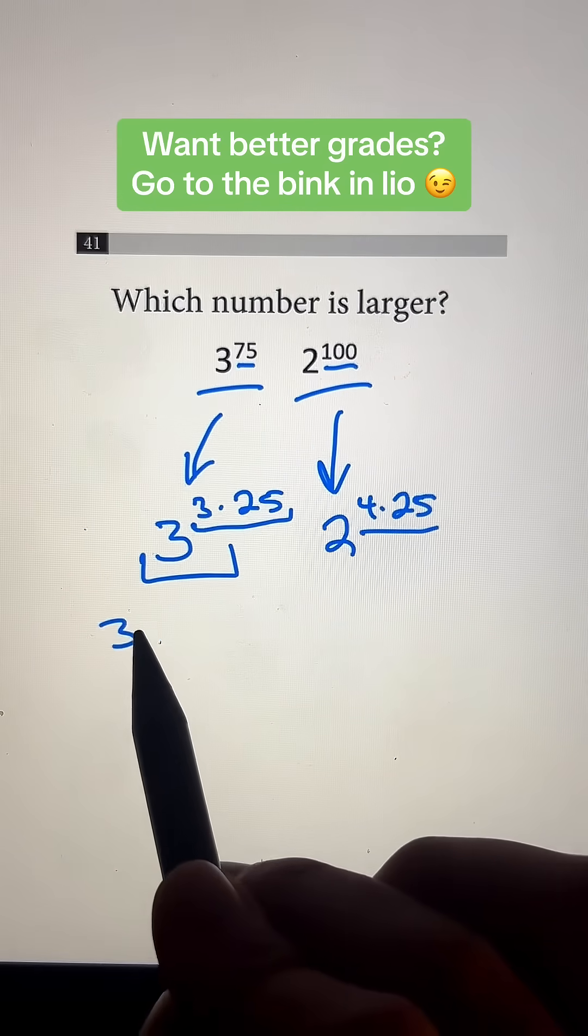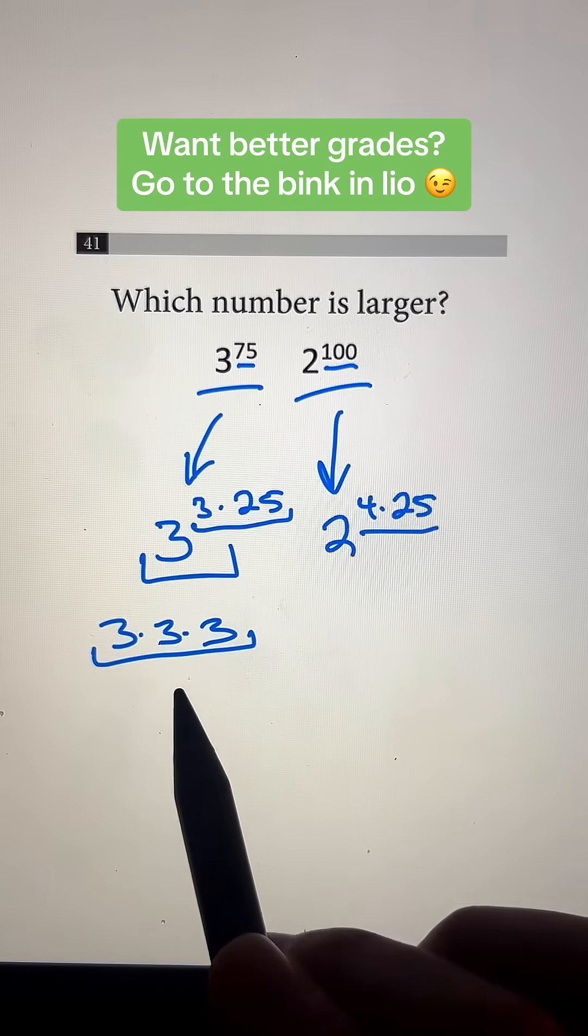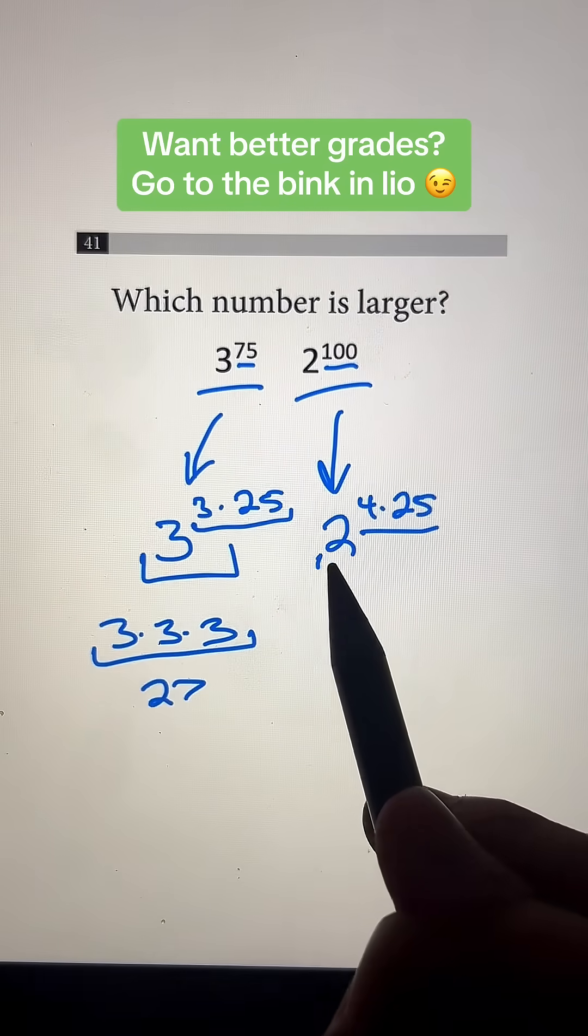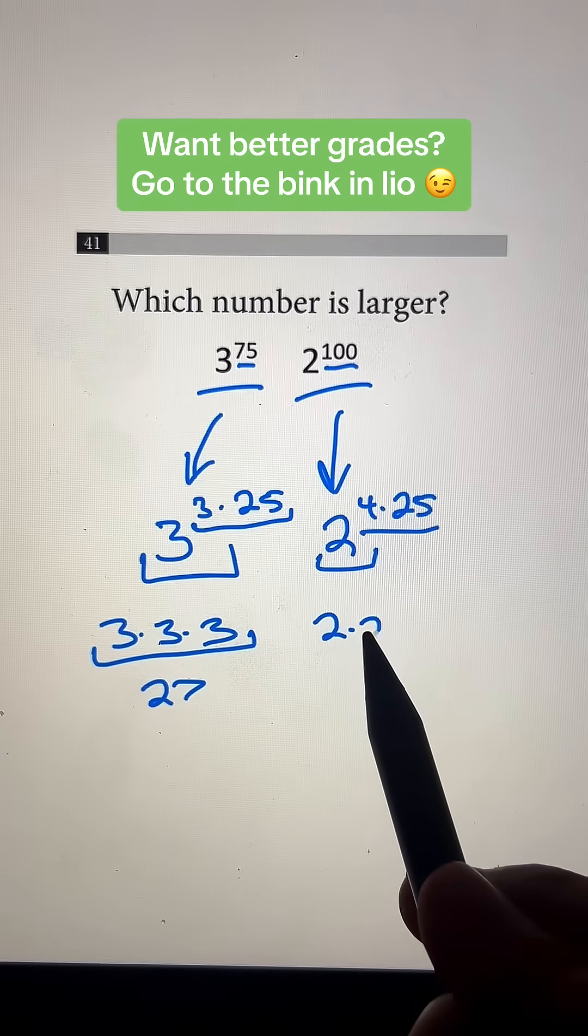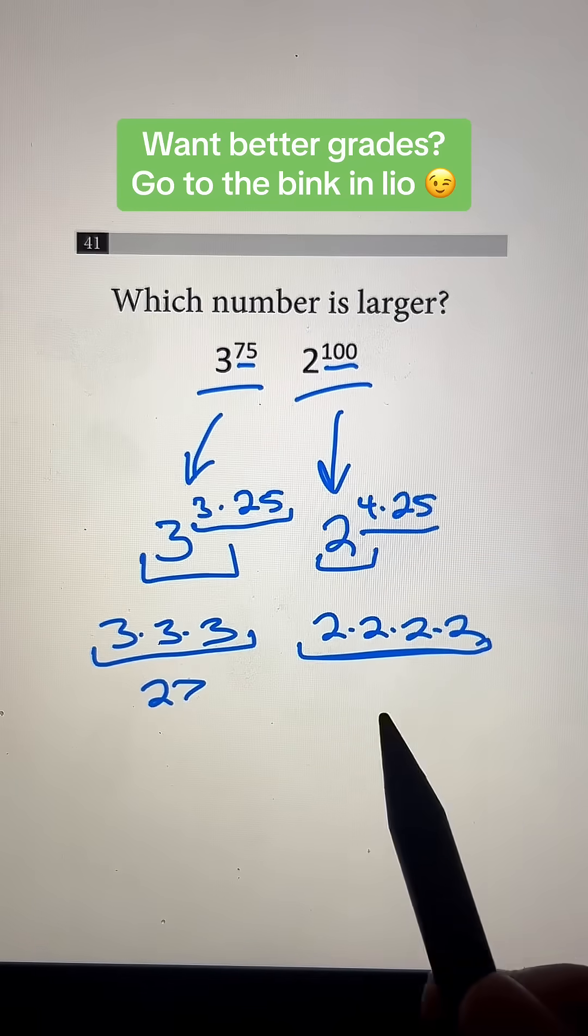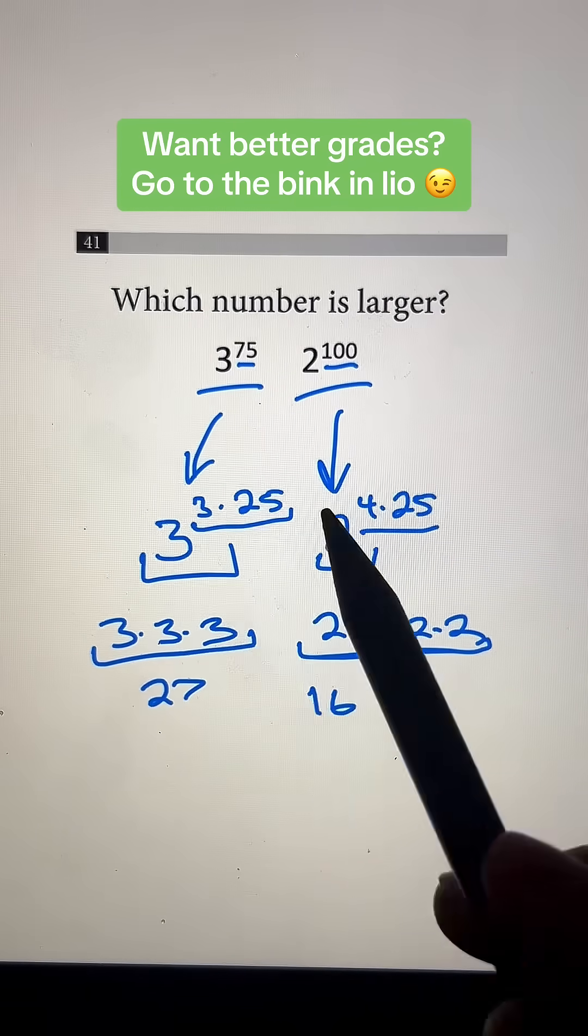So 3 to the 3rd power is going to be 3 times 3 times 3. That's going to multiply out to 27. And 2 to the 4th power is going to be 2 times 2 times 2 times 2, and that's going to multiply out to 16.